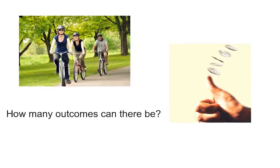If they flip the coin three times, how many possible outcomes can there be? This is the question that we want to figure out. Lots of times when we work with probability, we need to calculate outcomes. One way to calculate outcomes is by using a tree diagram.